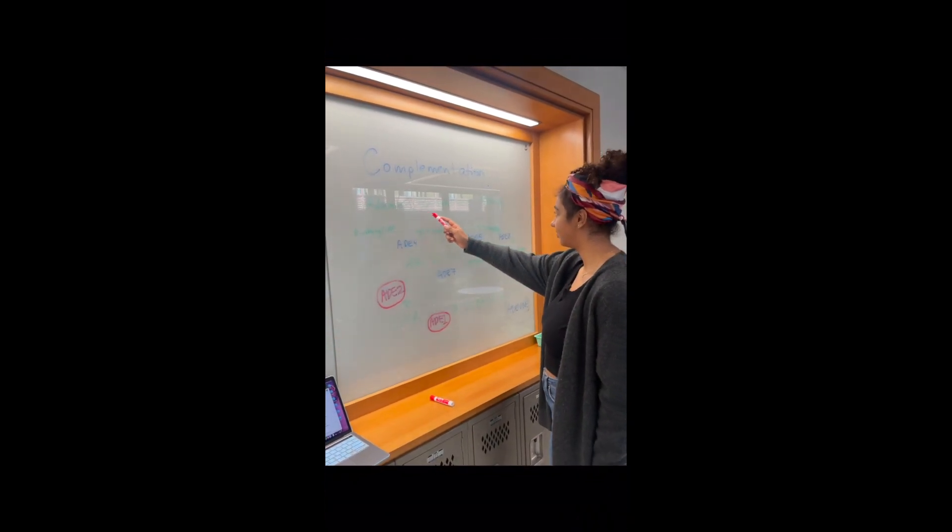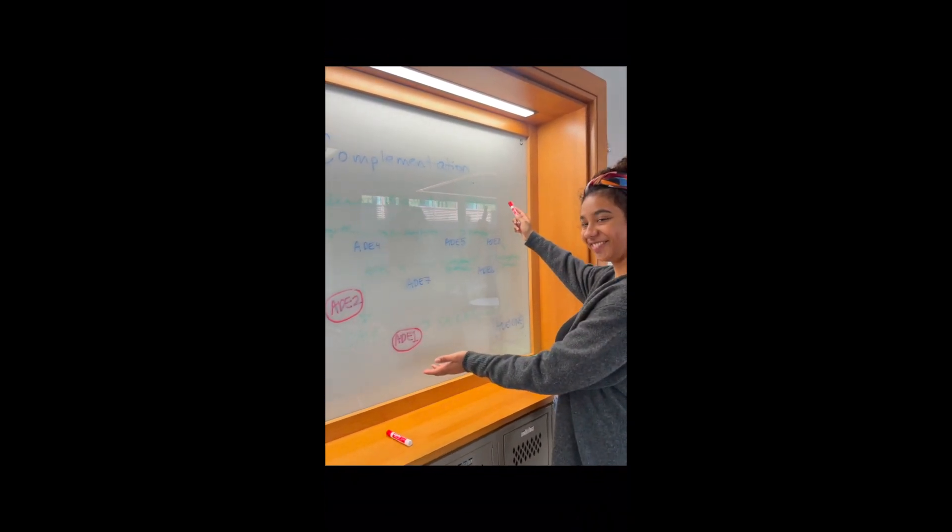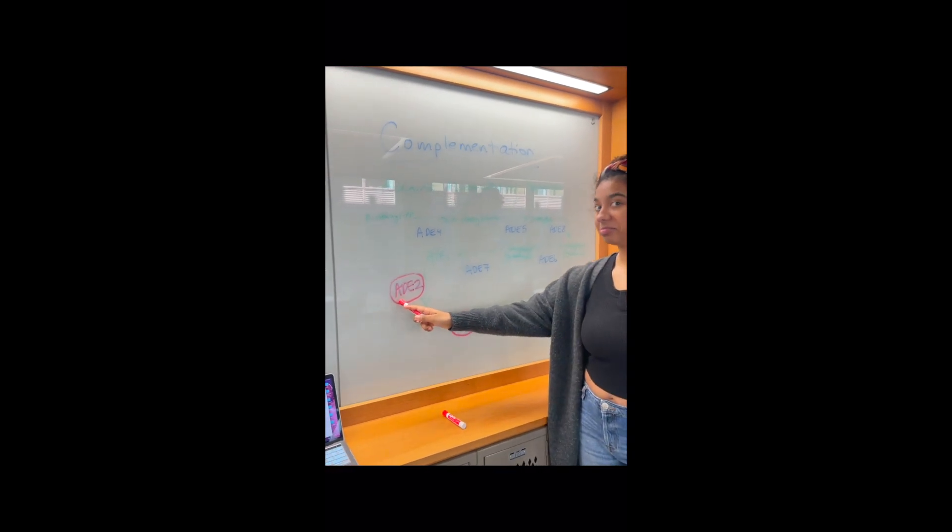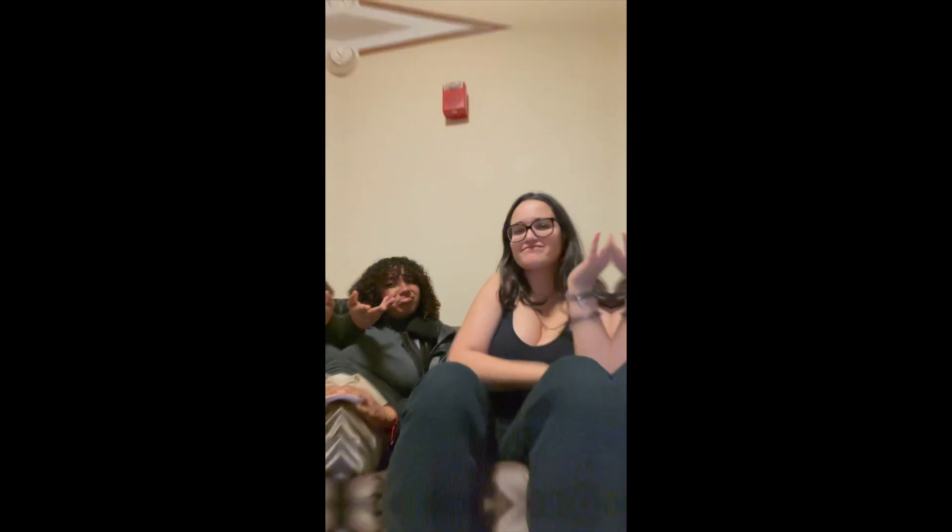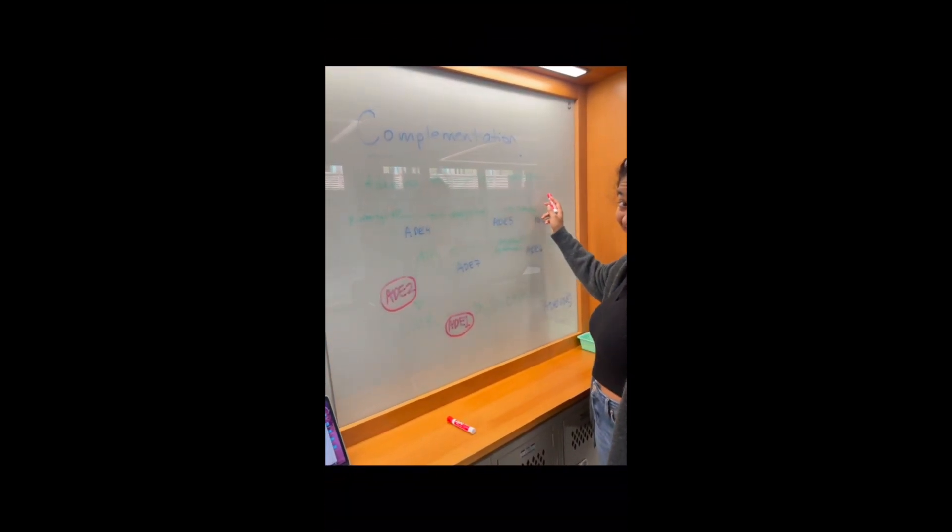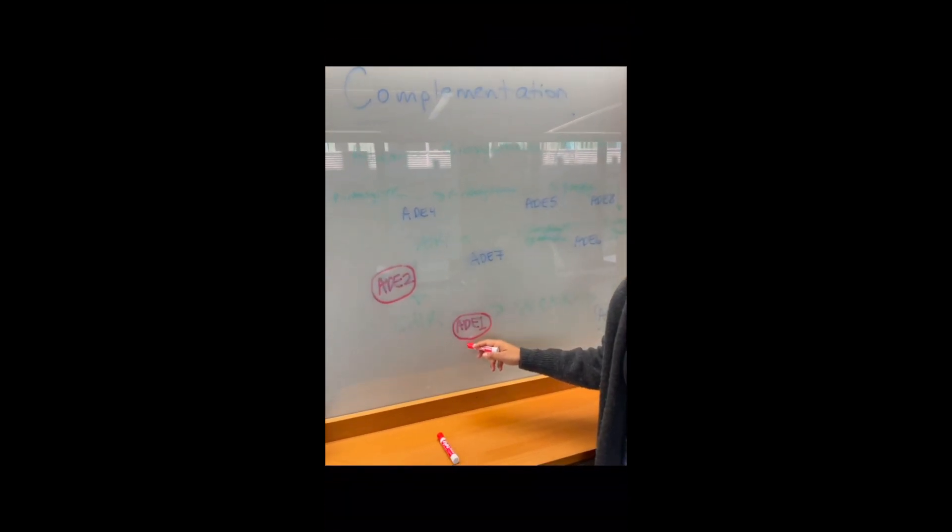Yeast is super useful as a demonstration of this genetics concept because they can exist in haploid and diploid forms. We start with homozygous recessive mutations that are haploid, meaning they only contain one copy of each gene. How do we know that they are mutant?